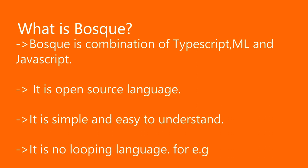Bosque is an open source language designed to improve developer productivity and software quality with a range of new compiler and tool experiences. They all work together to eliminate accidental complexity. The new language is supposed to make things simple for both machines and humans. Bosque is a no-looping language.